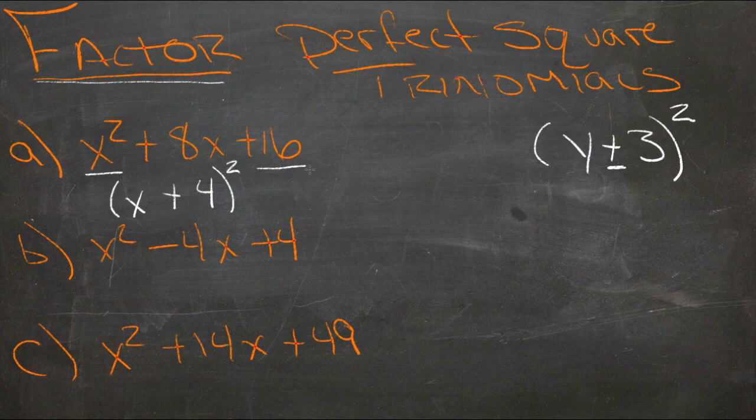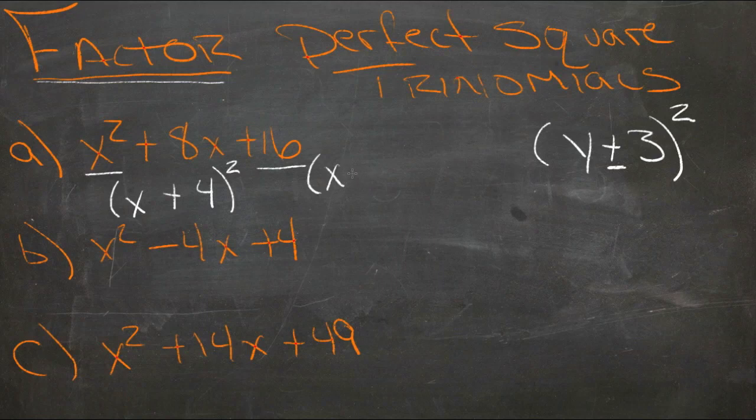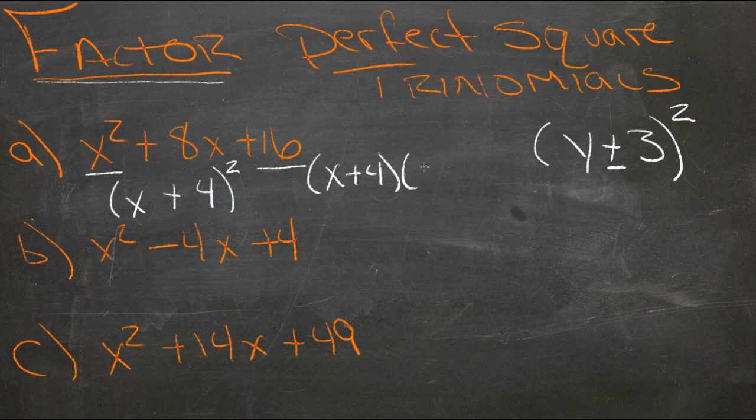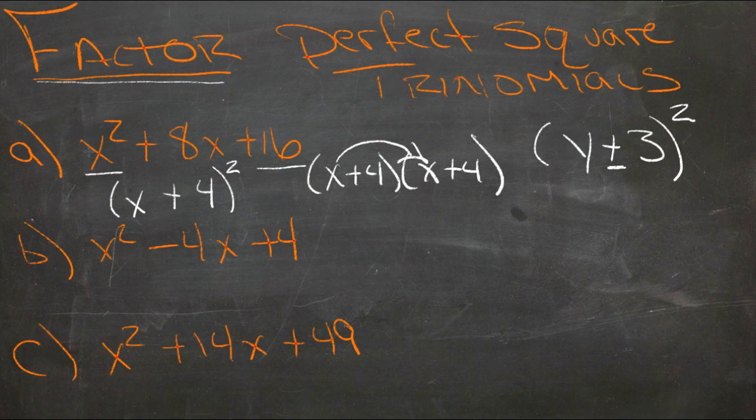Now we can check that and see if that's actually correct. By multiplying that out, (x + 4)² would be (x + 4) times (x + 4). So we'd have x times x, that's our x².